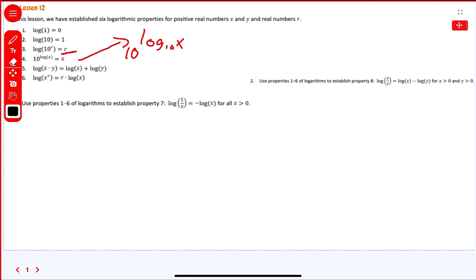So, 5 is log of x times y equals log x plus log y. That's the same thing as our exponent properties, right?